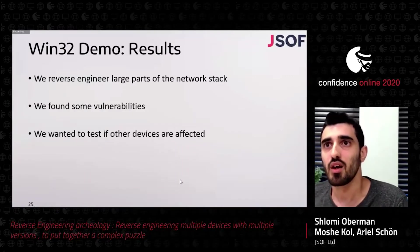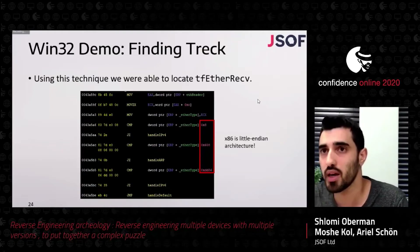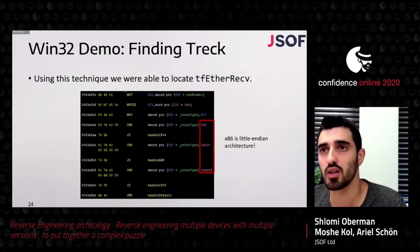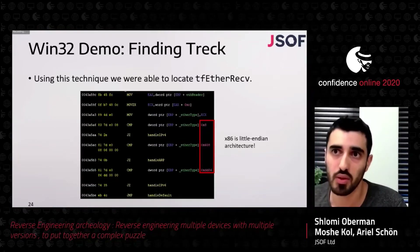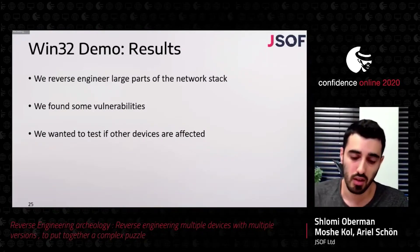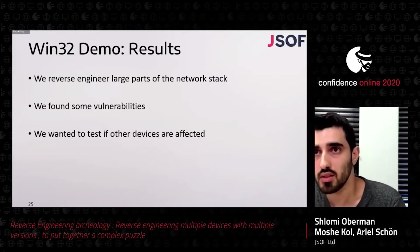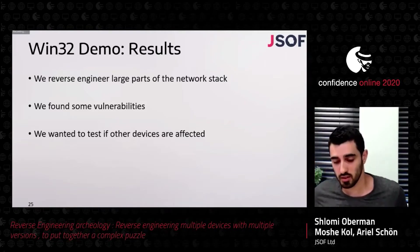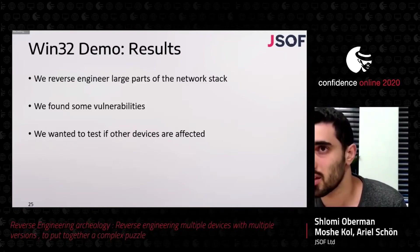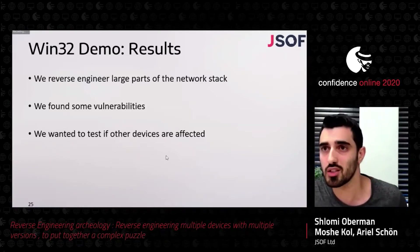From the tf_ether_receive function we were able to branch to other parts of the stack — to the function that handles IPv4 packets and the function that handles IPv6. We started reverse engineering large parts of this demo and large parts of the network stack, and we were able to find some vulnerabilities and wanted to test if other devices are affected. The drawback of using the demo is that the version of the Treck stack is relatively old. So we ended up searching online for Treck TCP/IP.